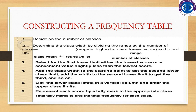To construct a frequency distribution: first, decide on the number of classes. Then determine the class width, which equals the range divided by the number of classes. The range is the highest score minus the lowest score. So range divided by number of classes gives the class width or class interval — and always round up the result. For example, if you get 4.5, round it to 5; if you get 2.1, round up to 3.